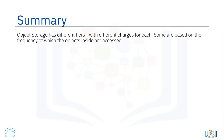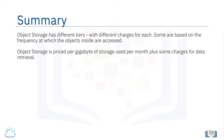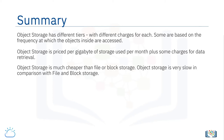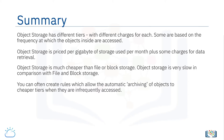To summarize: object storage has different tiers with different charges, some based on the frequency at which objects are accessed. Object storage is priced per gigabyte of storage used per month, plus some charges for data retrieval. Object storage is much cheaper than file or block storage, but also very slow in comparison. You can often create rules which allow the automatic archiving of objects to cheaper tiers when they are infrequently accessed.